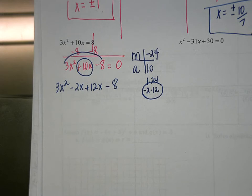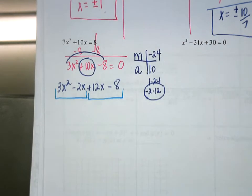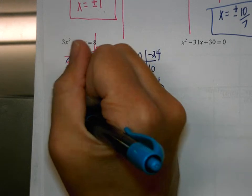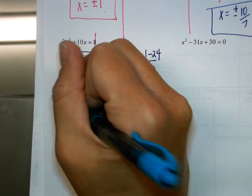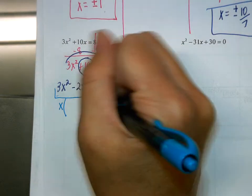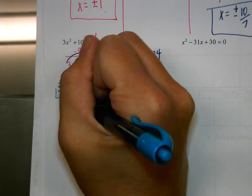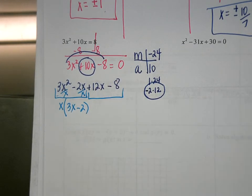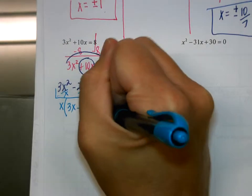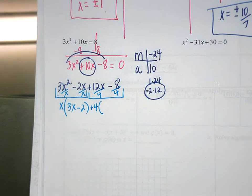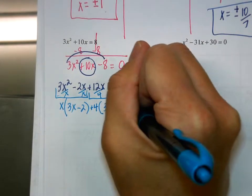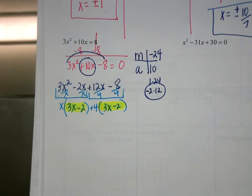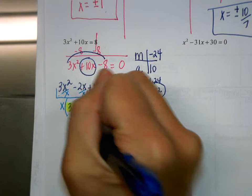At this point, we will group them into the two sets. What is the GCF of the first group? Just x. Taking out an x, and dividing these by x, I'm left with 3x minus 2. What's the GCF of my second group? 4 — and I'm going to write that as a positive 4. Dividing each of these by 4, I'm left with 3x minus 2. Our parentheses here are the same, which is what we want. So this ends up factoring to be 3x minus 2 and x plus 4, and then we set that equal to 0.